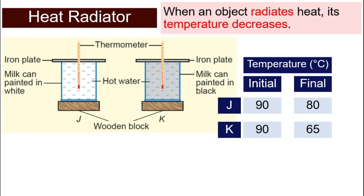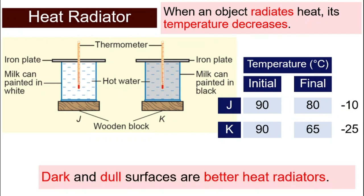But for K, the milk can that is painted in black, you will find that there will be a bigger drop in temperature, it will record around 65 degrees Celsius. So for J, it shows a decrease of 10 degrees Celsius, whereas for K, it shows a drop of 25 degrees Celsius.